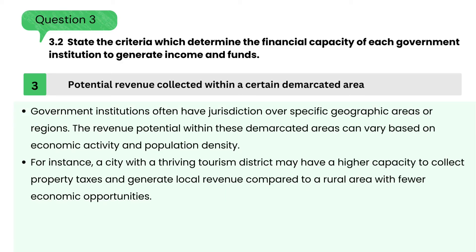3. Potential revenue collected within a certain demarcated area — government institutions often have jurisdiction over specific geographic areas or regions. The revenue potential within these demarcated areas can vary based on economic activity and population density. For instance, a city with a thriving tourist district may have a higher capacity to collect property taxes and generate local revenue compared to a rural area with fewer economic opportunities.